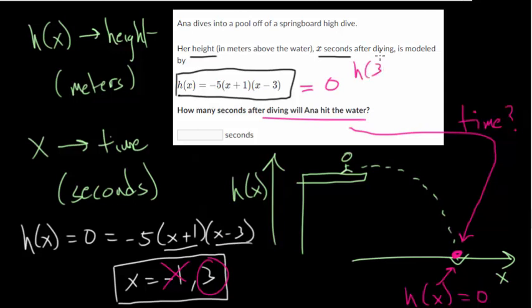Now you can check this. Plug in 3 to your height equation here, or the equation that models height, and notice you get -5 times (3 + 1 is 4) times (3 - 3), which is 0, and 0 times -20 is 0. When you check it, when you plug in an x value of 3 seconds, you do see that the height does give you back 0.